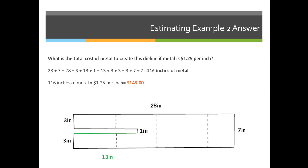The correct answer you should have come up with is 116 inches of metal at $1.25 per inch means this die will cost us $145.